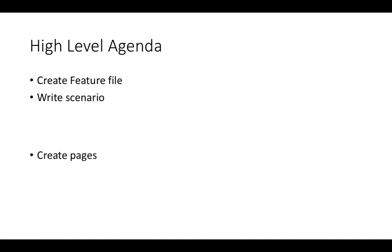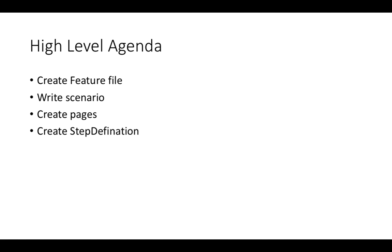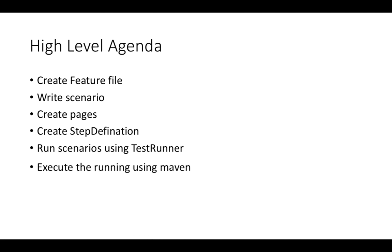We'll write the scenarios within that feature file, and we are going to use the Page Object Model again. So we are going to create pages. Once we're done with the pages, we'll write our step definition file. We'll execute that step definition using the test runner, and finally we will execute this test runner using Maven.